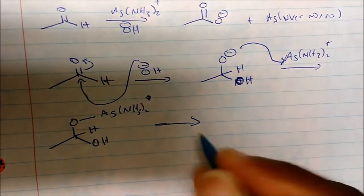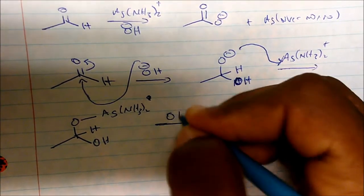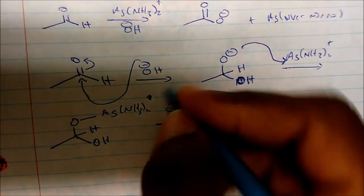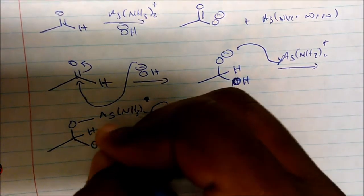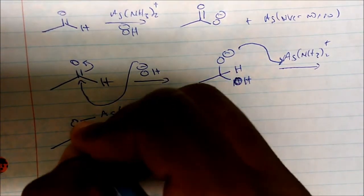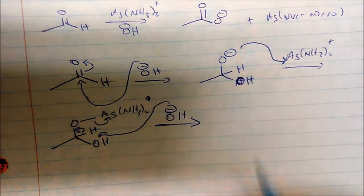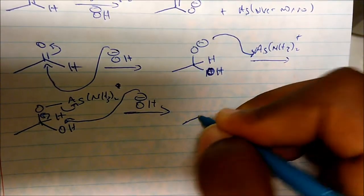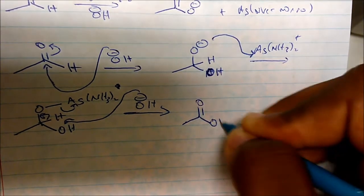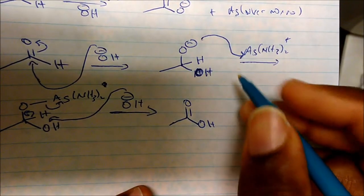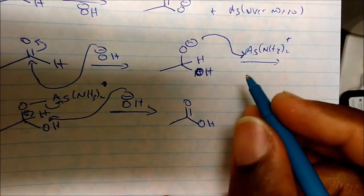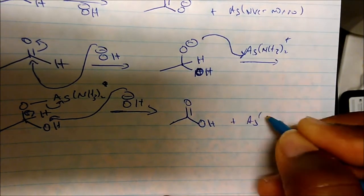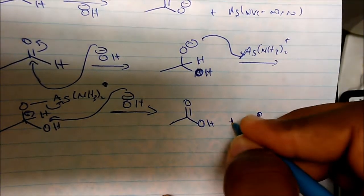Now in the second to last step, another molecule of hydroxide will come in and deprotonate this hydrogen here. We're going to form the double bond and then expel silver. So in this case we get the carboxylic acid plus a silver mirror.